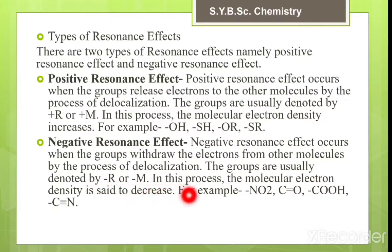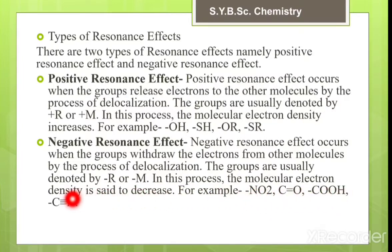In the case of the negative resonance effect, it occurs when groups withdraw electrons from other molecules by the process of delocalization. These groups are usually denoted by -R or -M. In this process, the molecular electron density decreases. Examples include NO2, carbonyl (C=O), carboxyl (-COOH), and cyanide groups.